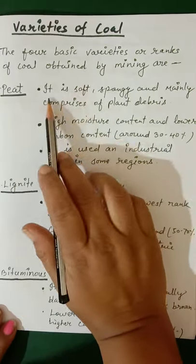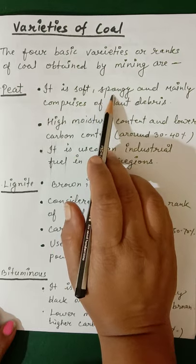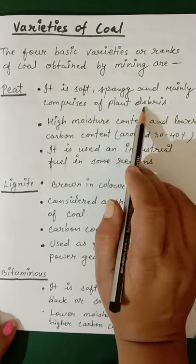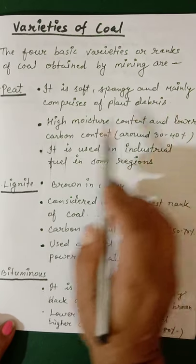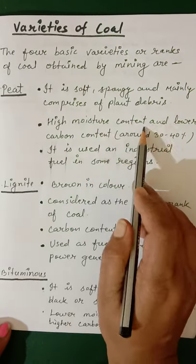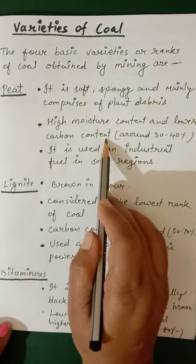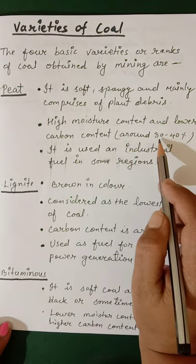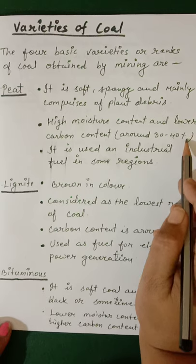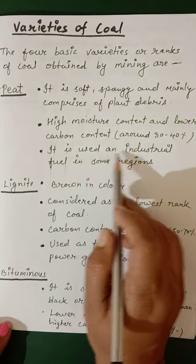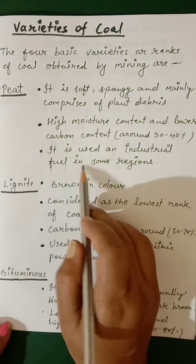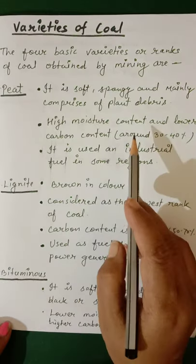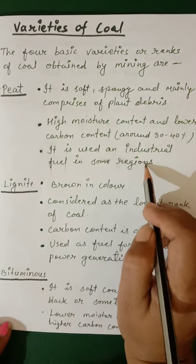Peat: it is a soft, spongy material mainly comprised of plant matter. It has high moisture content and lower carbon content — carbon content is around 30 to 40%. It is used as an industrial fuel in some regions. Peat is the first step of coal formation.